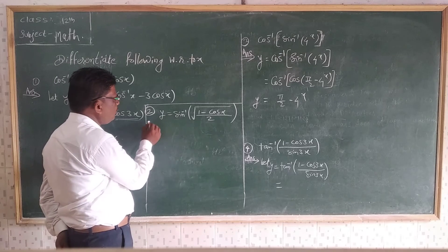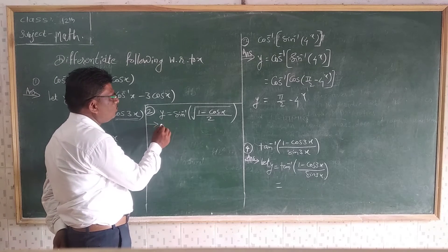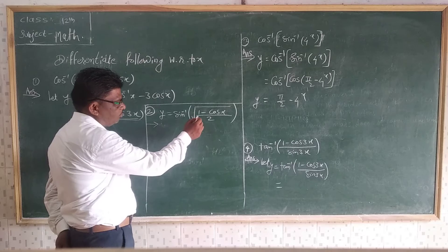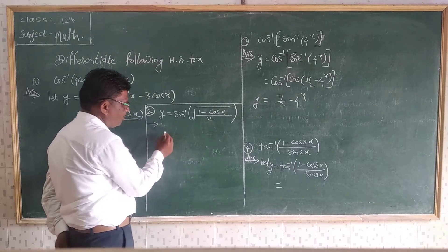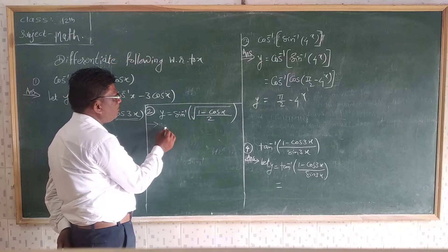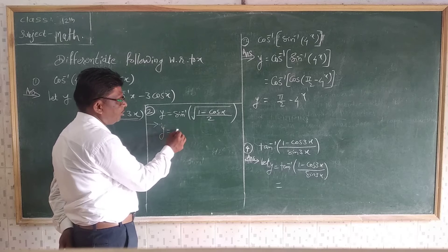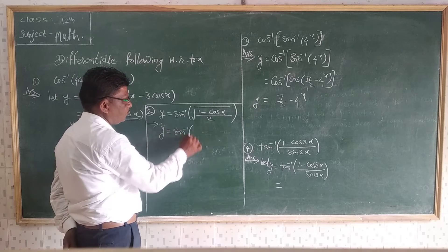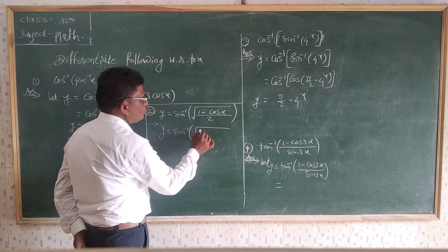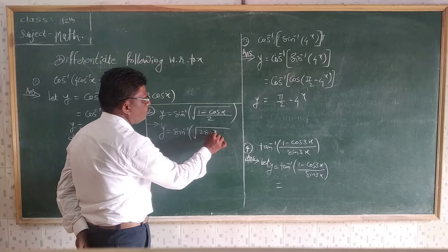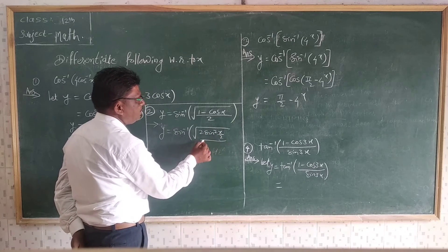Second example is, if suppose y equal to sin inverse of square root of 1 minus cosX by 2. So first simplify this by using the trigonometric formulae. 1 minus costheta means 2 sin²(theta/2).